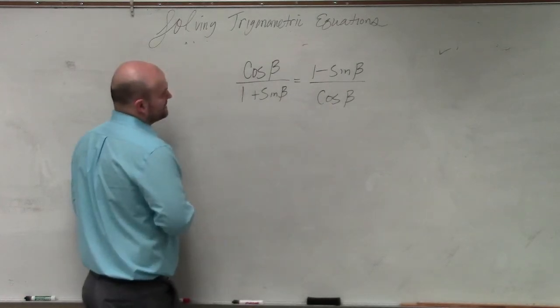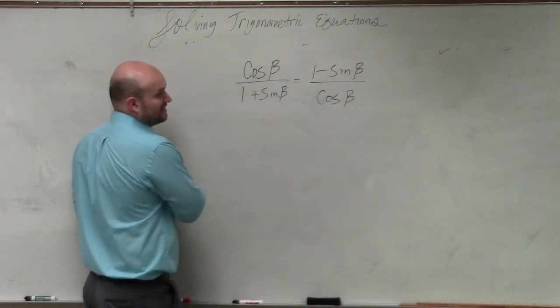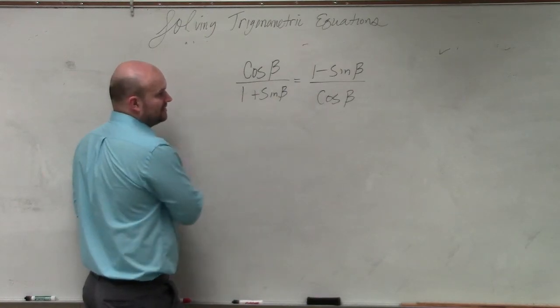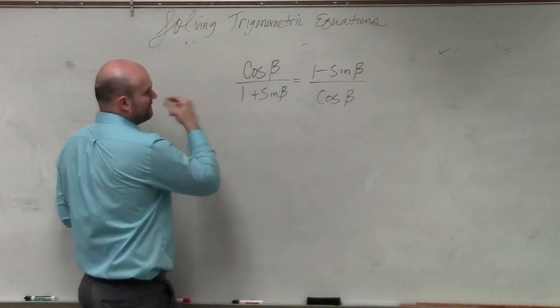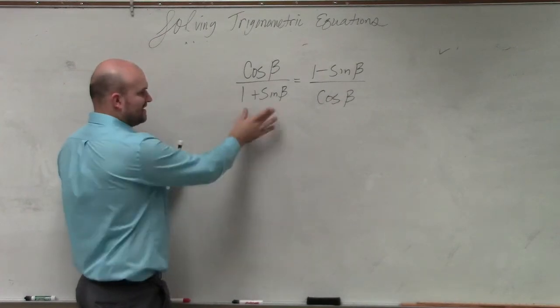So one thing I might do is I could multiply by the conjugate on the top and bottom over here. I could also multiply by the reciprocal on the left and right. Let's try that, actually. If I wanted to get rid of the, well, that's going to give me 1 here. So let's multiply by the conjugate. Let's see if I can get this down to one term.